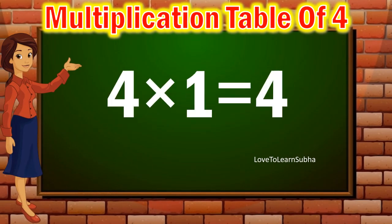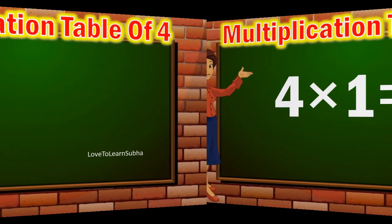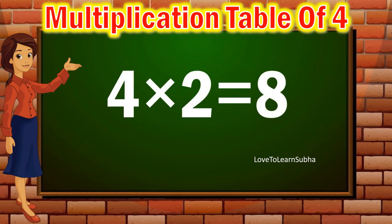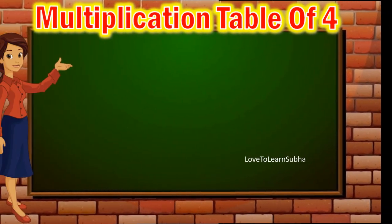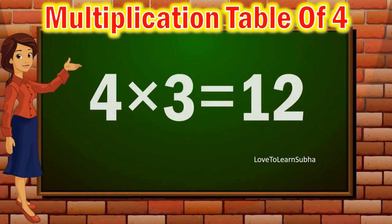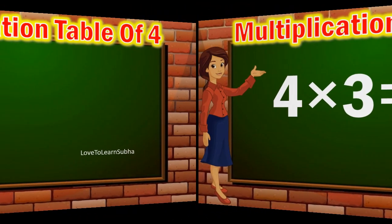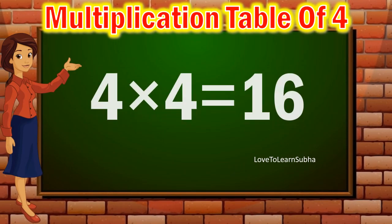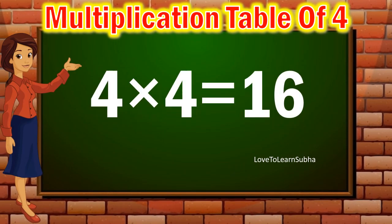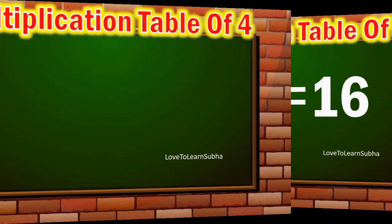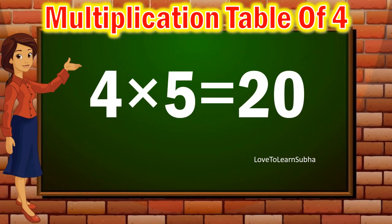4 ones are 4. 4 twos are 8. 4 threes are 12. 4 fours are 16. 4 fives are 20.